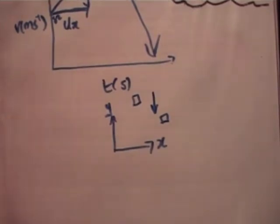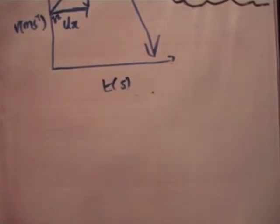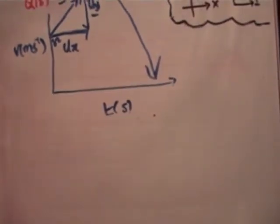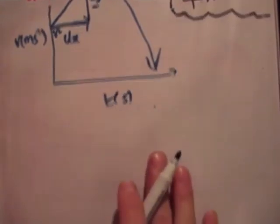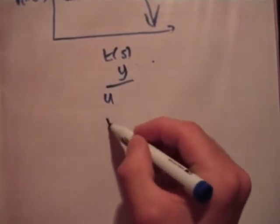Alright. So for that reason, my displacement is actually negative 82.5 metres. Okay. So what I'm going to do is I'm going to do my y axis, or my y dimension, and I'm going to do UVAST for that.